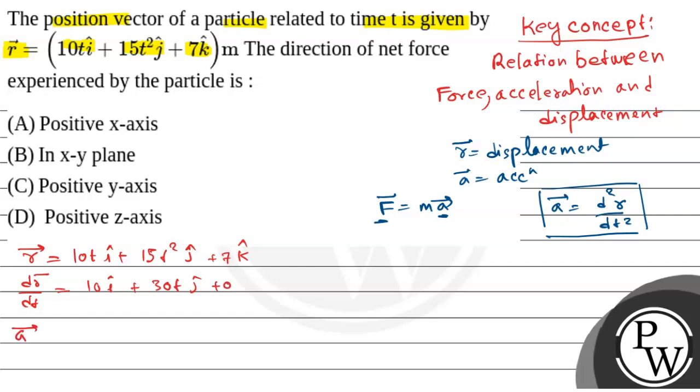Now acceleration vector is what? That is d²R by dt square is equal to 30 j cap because 10 is constant. That means the acceleration vector is along positive y-axis.